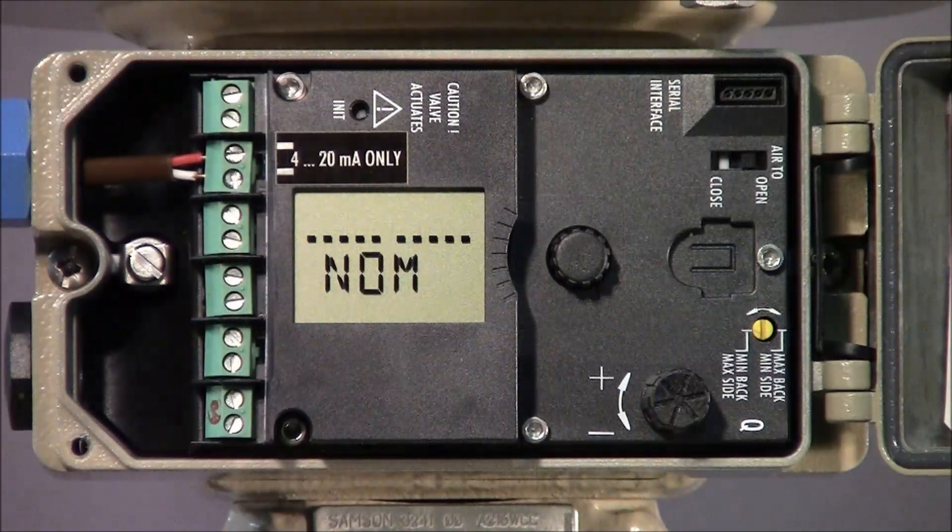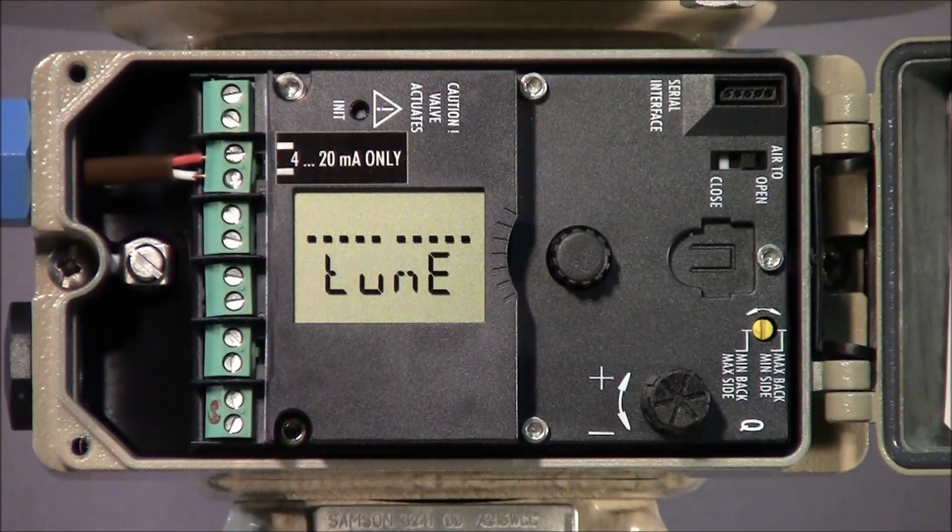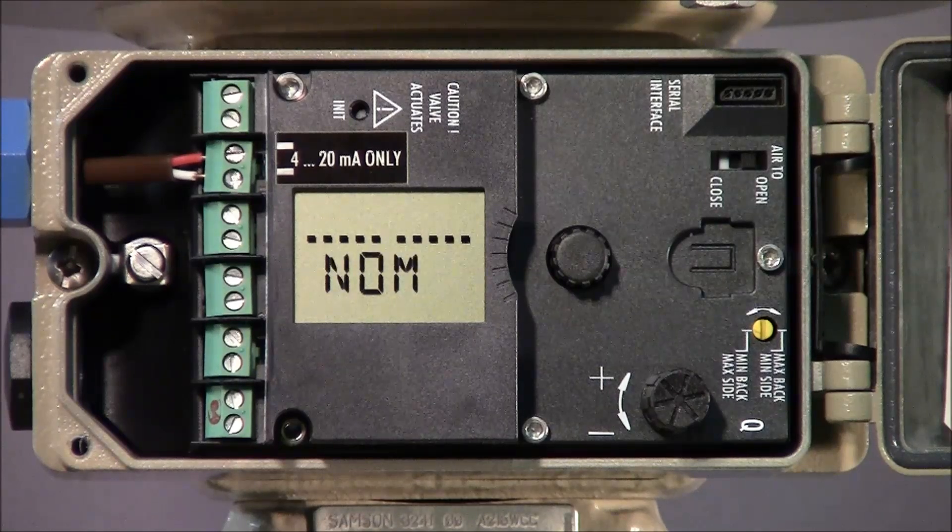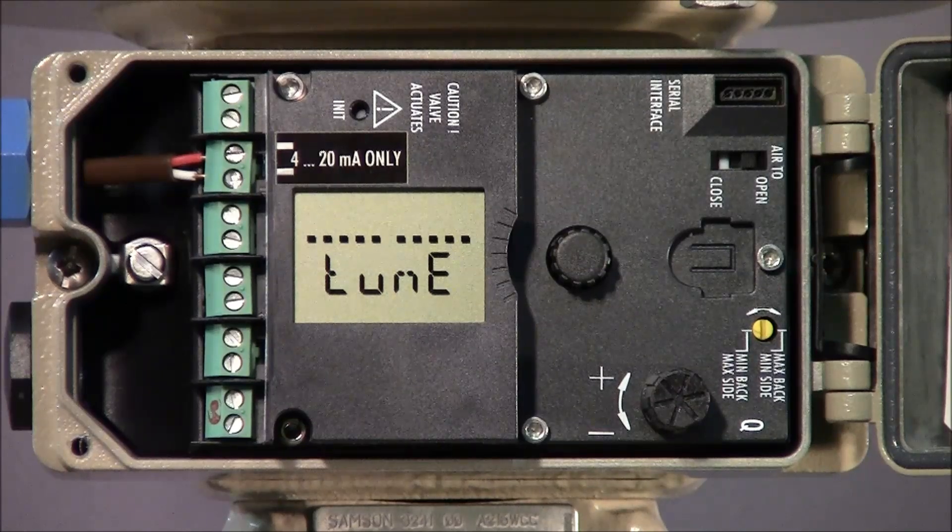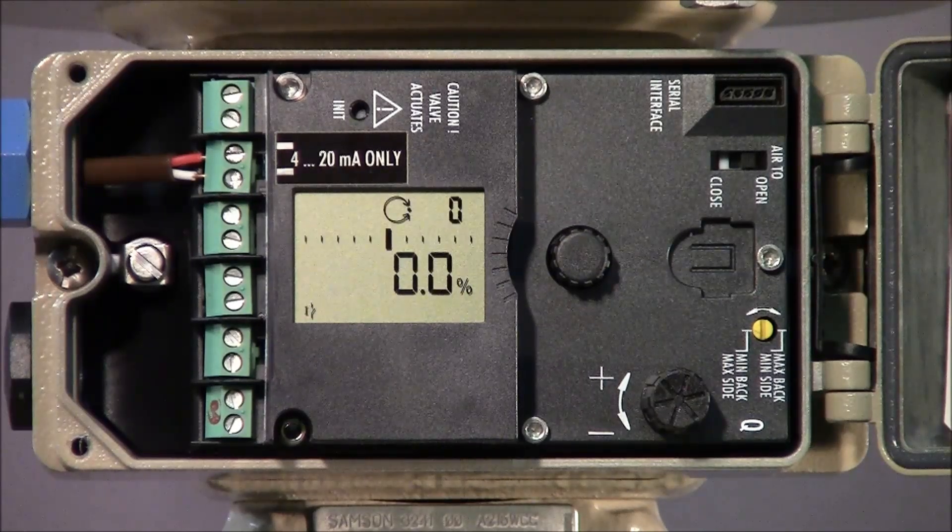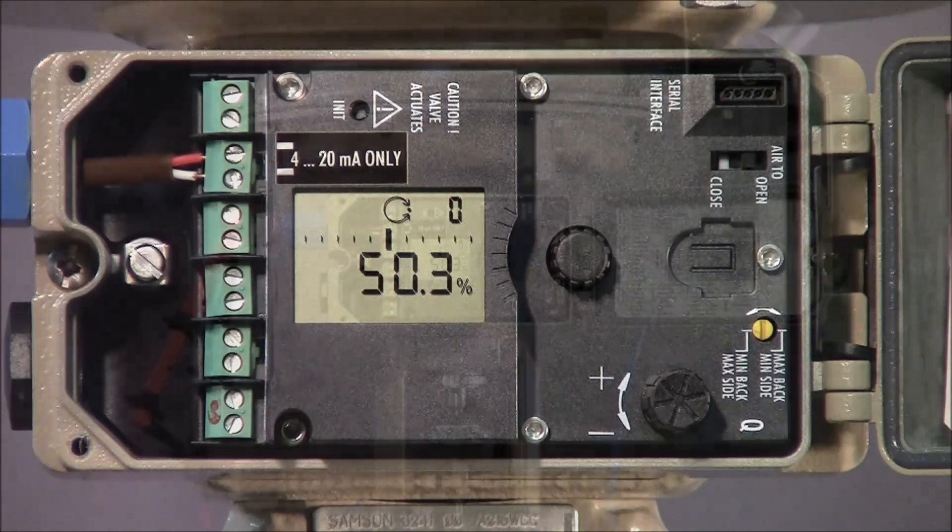Once the calibration is completed, the display will briefly show Tuned and then revert to the position specified by the control signal. In this case, we've set it to 12mA or approximately 50% as indicated by the display.